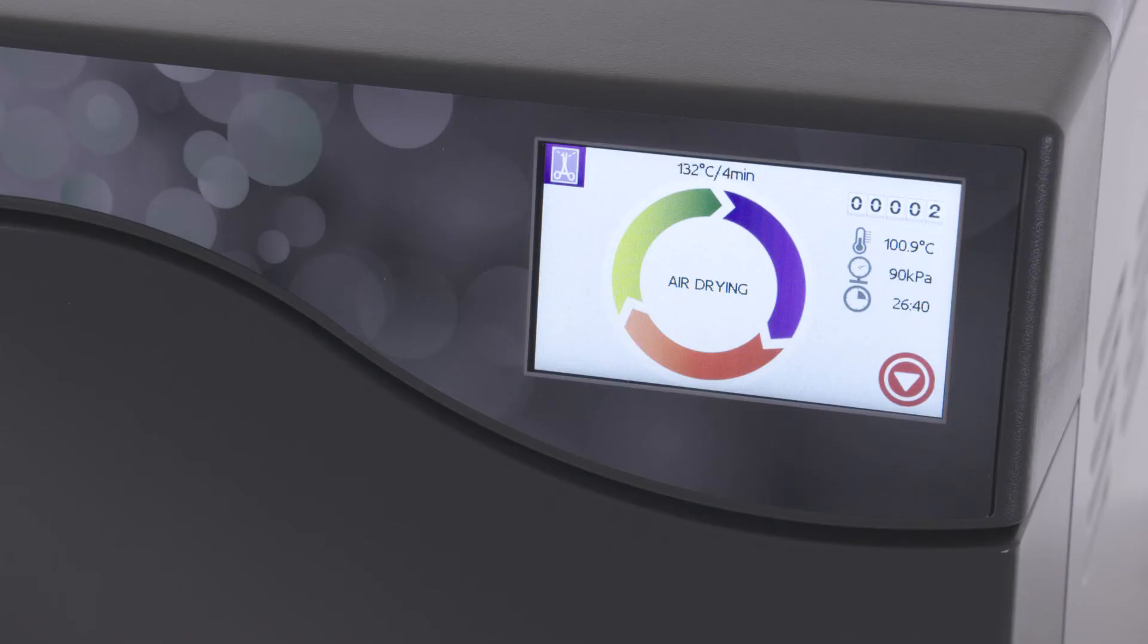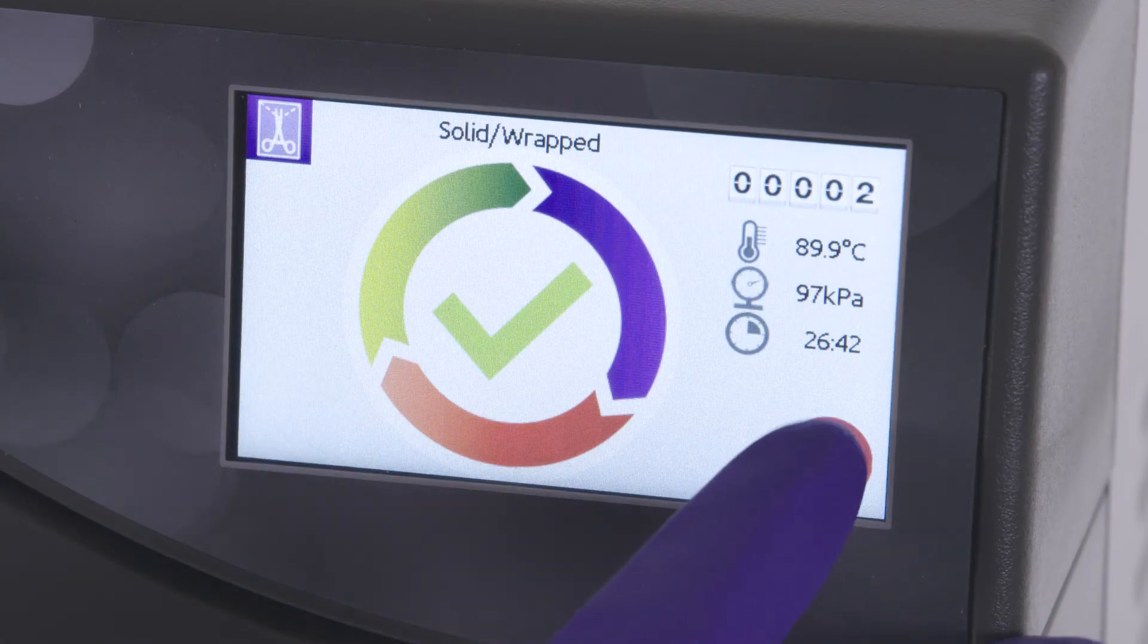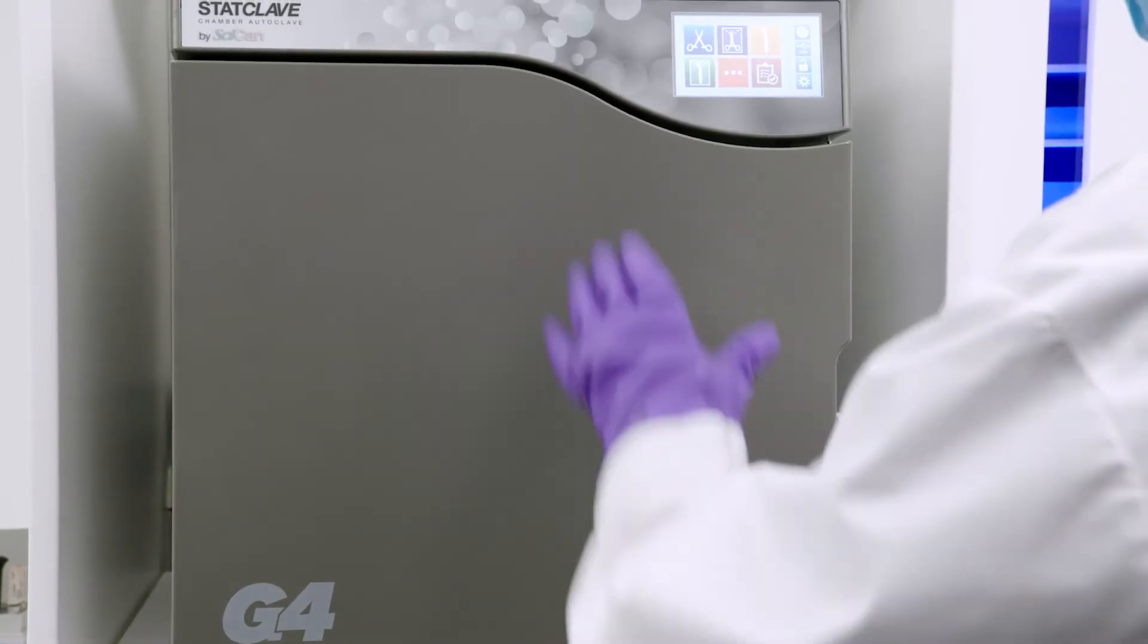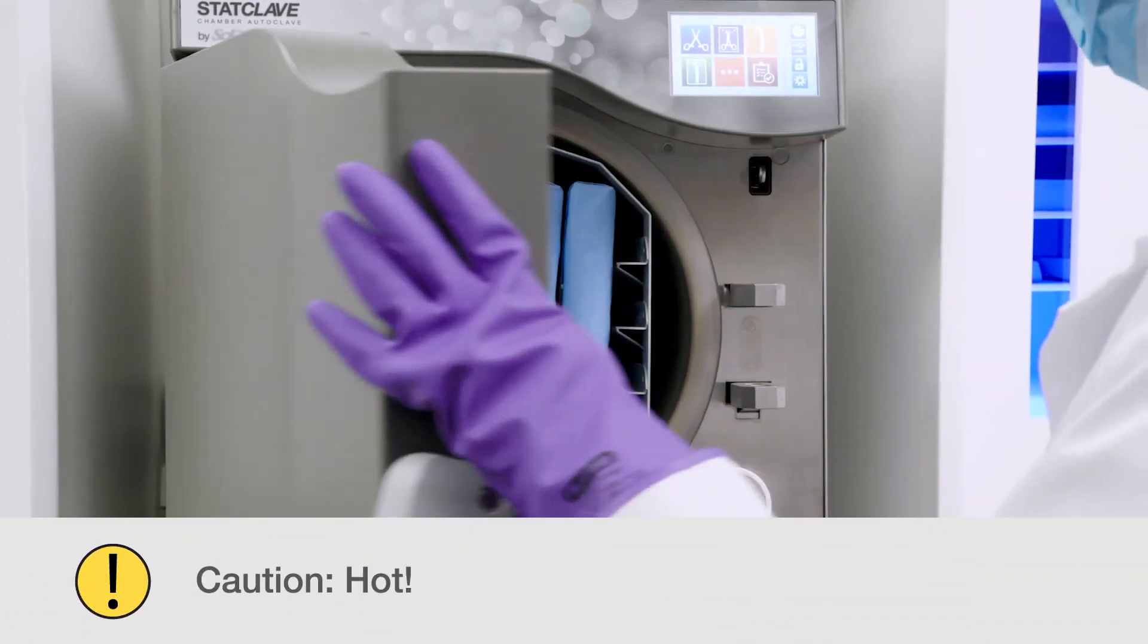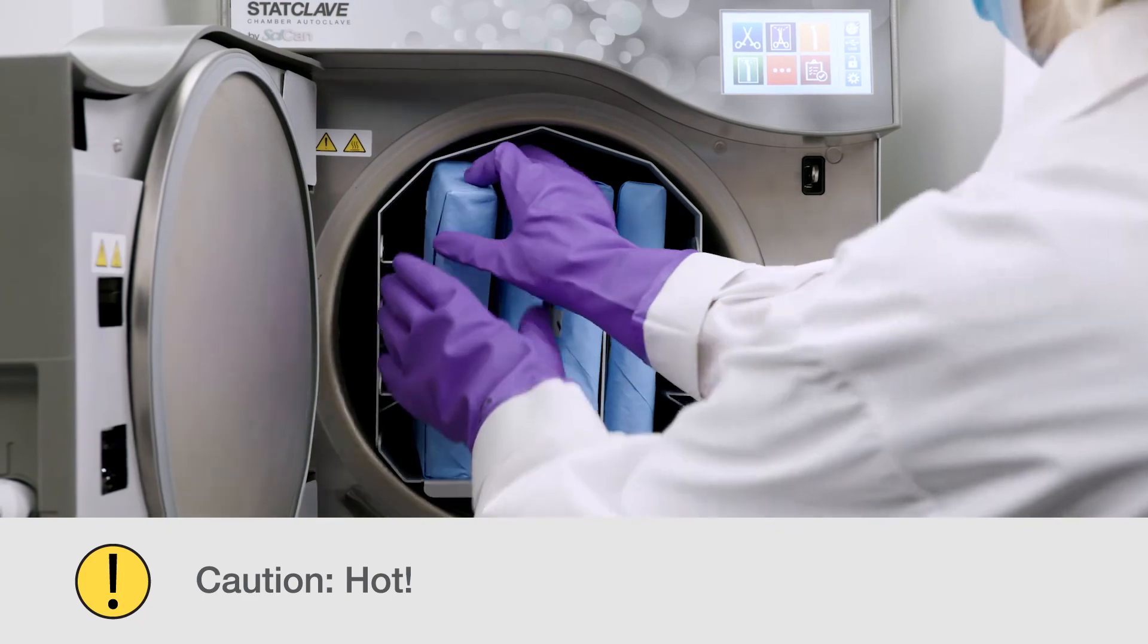When the sterilization and drying cycles are complete, and the chamber pressure returns to preset safety limits, the screen will give the message, cycle complete. Press the stop button and open the door. Carefully retrieve the sterilized material. Caution! Contents may still be hot.